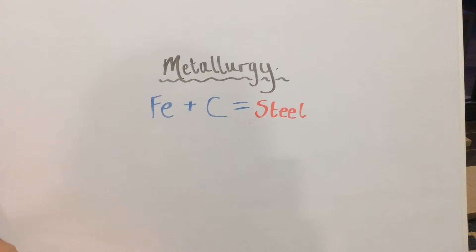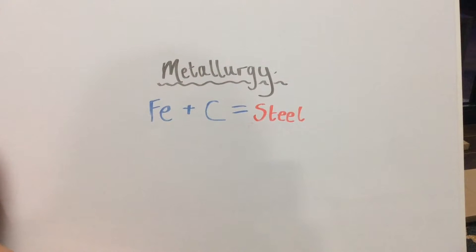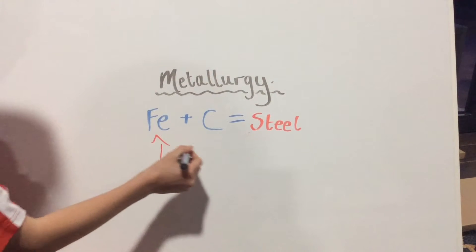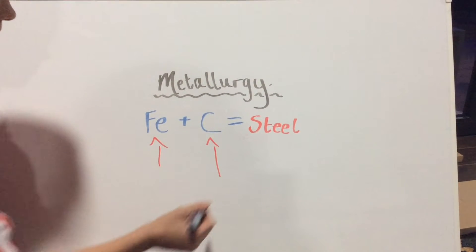For example, you might be tasked with the creation of steel. This would be achieved by mixing iron with small amounts of carbon, producing a much harder metal.